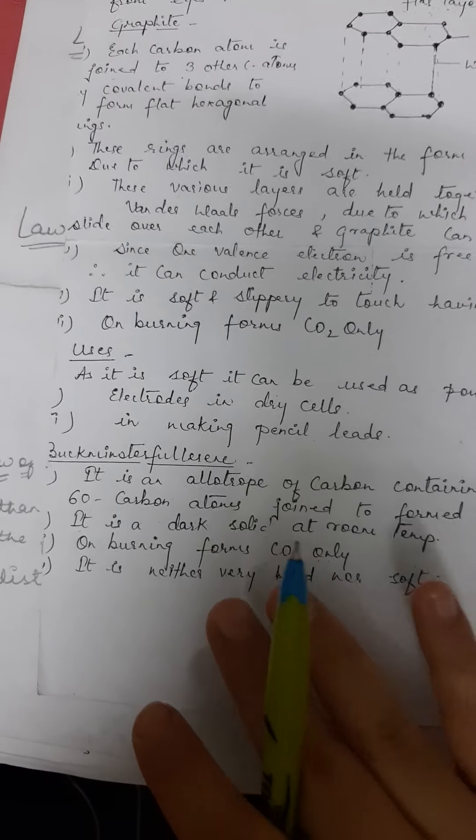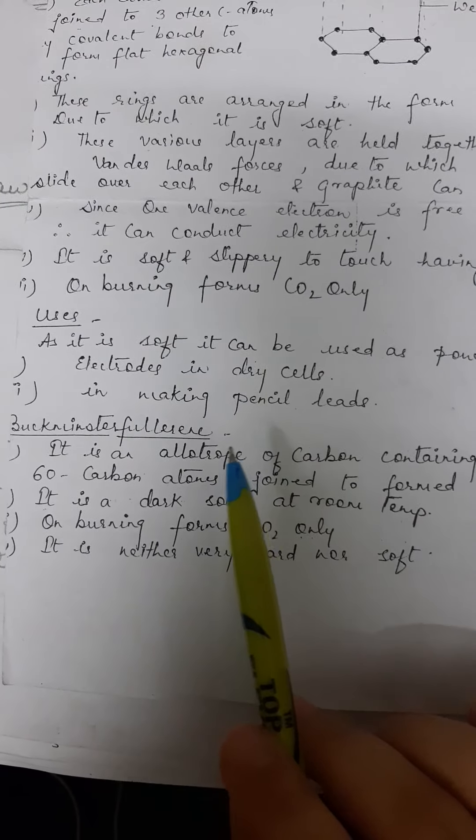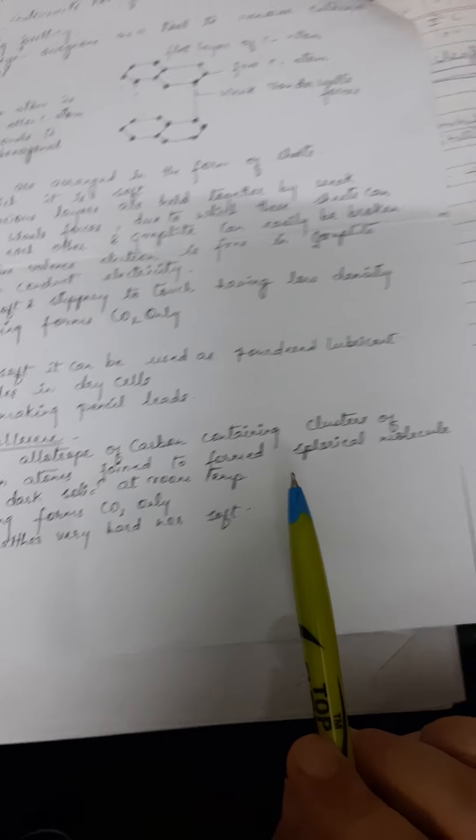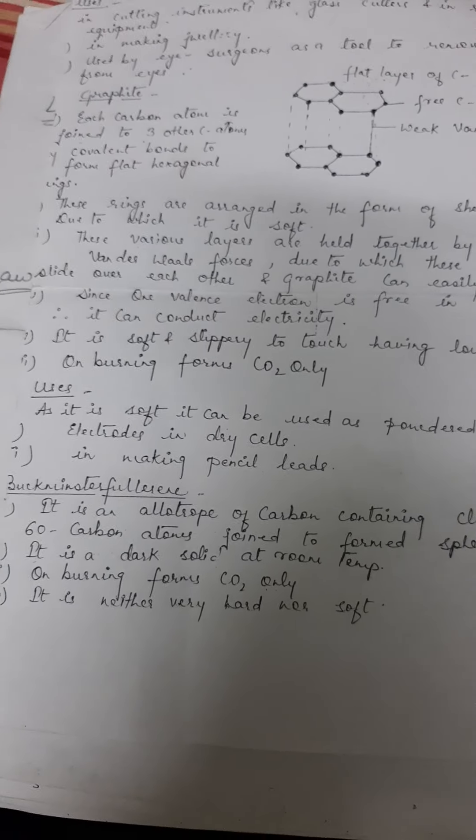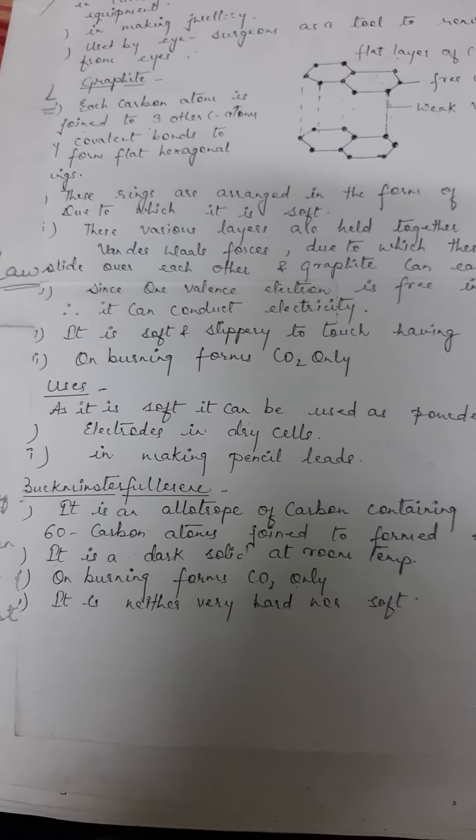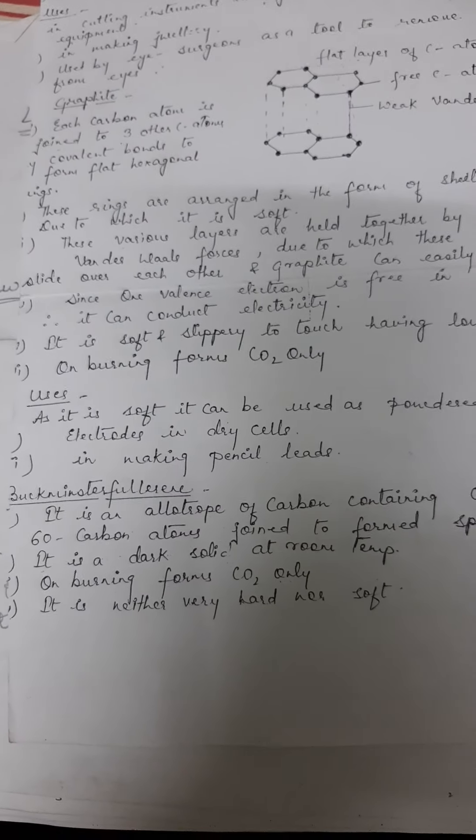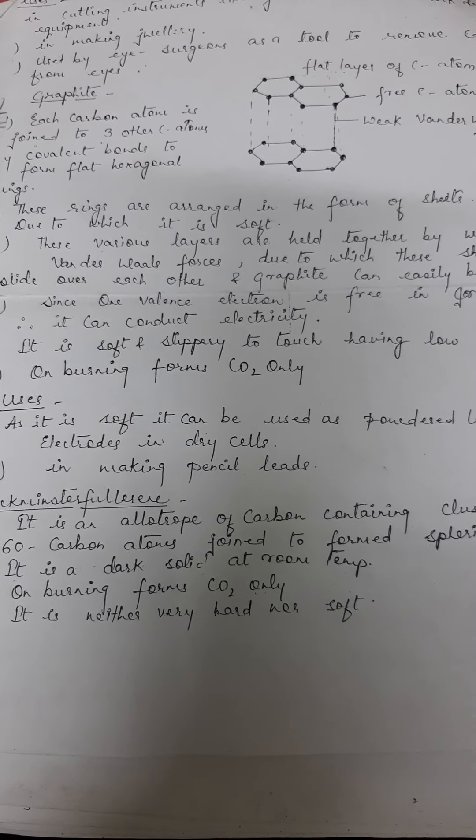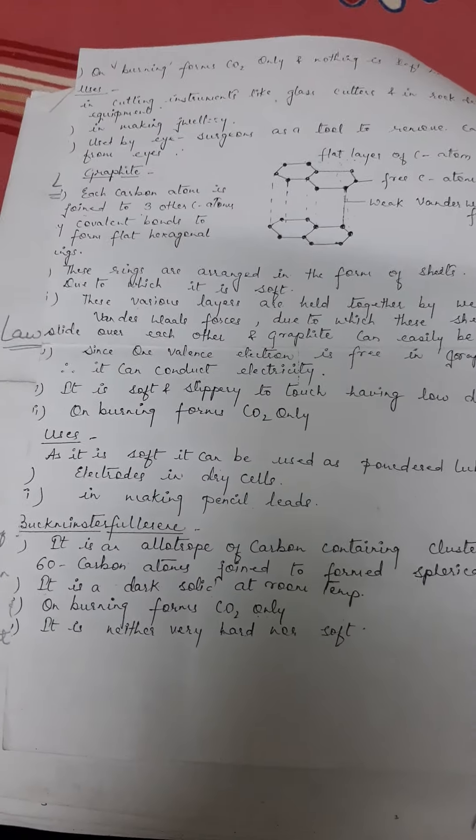This is about diamond and graphite. And the third allotrope is buckminsterfullerene. You just need to remember that it consists of 60 carbon atoms joined to form a spherical molecule. It forms a spherical molecule with 60 carbons. Then it will form buckminsterfullerene. On burning it forms CO2 only. It is neither very hard nor soft, something in between diamond and graphite. It's like a ball made of 60 carbons, dark solid at room temperature. It forms a spherical structure and on burning forms CO2 only.